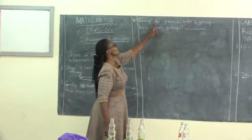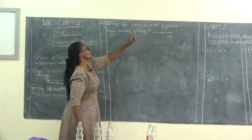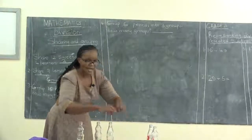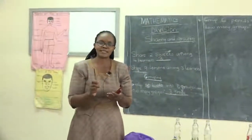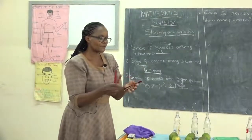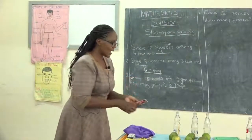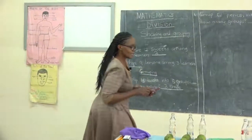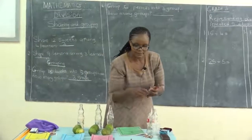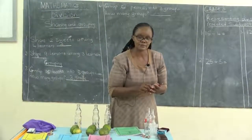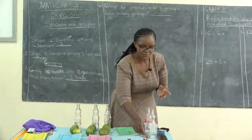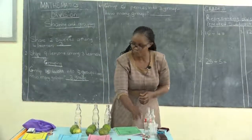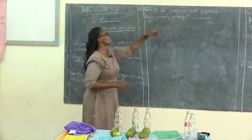We move on to the next one: group six pencils into three groups. Here are my pencils — I have six pencils. One, two, three, four, five, six. I am supposed to group them into three groups, which means one group should have three pencils. One, two, three — that is one group. One, two, three — another group. Let us count how many groups we have: one, two. When you group six pencils into groups of three, you get two groups.